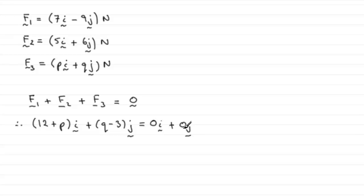Now we've got this we can compare components. If we compare components, that is we compare the I components with one another and the J components, looking at the I components what we have is that 12 plus P must be equal to 0. So 12 plus P equals 0, and it follows from this result that if we take 12 from both sides, P must equal minus 12.